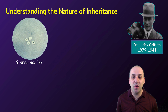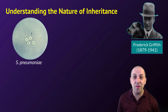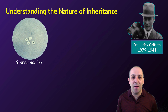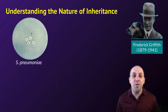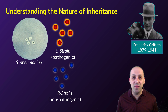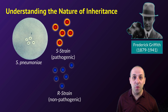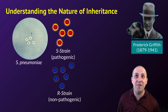We're going to jump ahead a little bit to an experiment carried out by Frederick Griffith in the beginning of the 20th century. Griffith was a disease researcher looking at a type of pneumonia caused by the bacterium Streptococcus pneumoniae. There are actually two different forms: the S strain, which is pathogenic and causes pneumonia, and the R strain, which does not cause pneumonia.